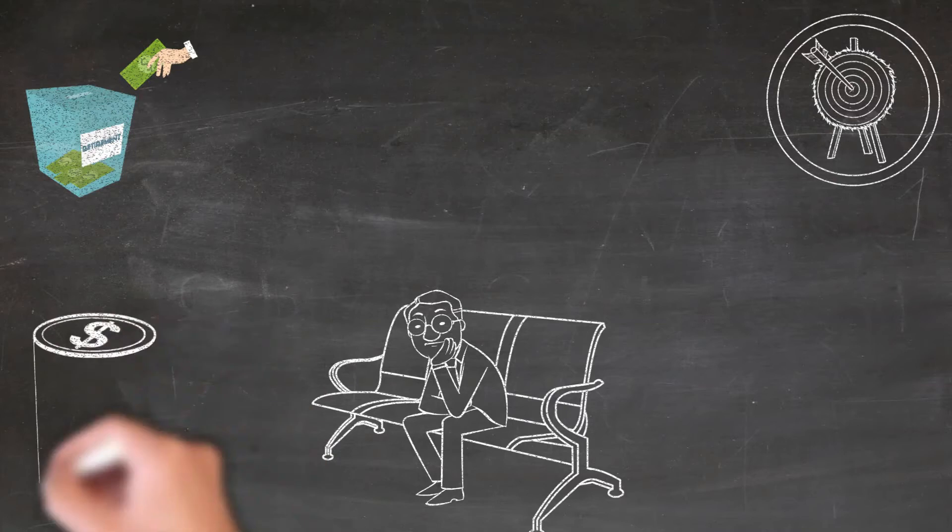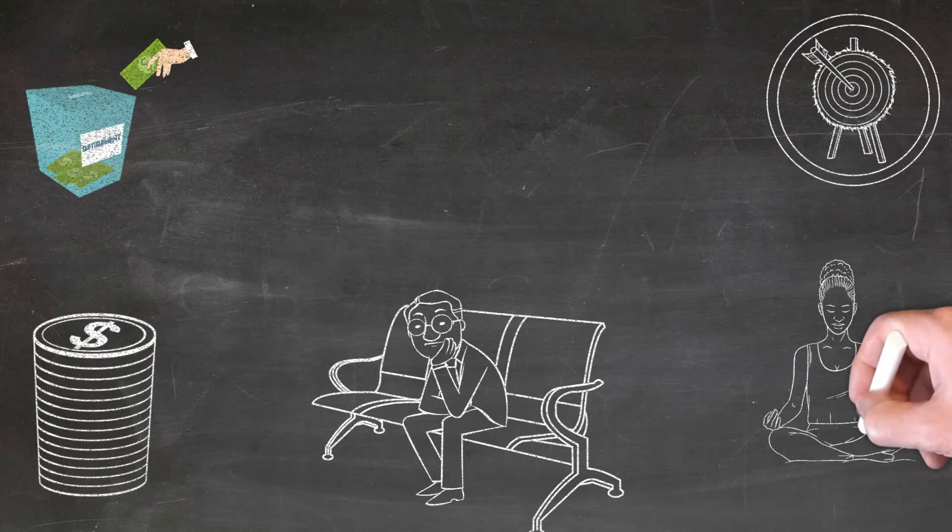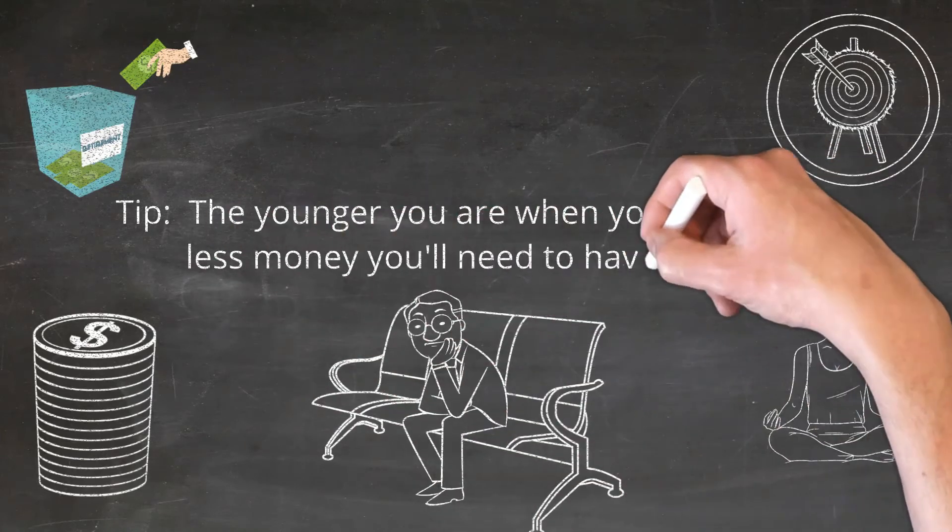For example, the amount of money you need to hit in your net worth has to do with your ideal lifestyle during retirement years and how old you are when you retire. An interesting tidbit: the younger you are when you retire, the less money you'll need to have saved.